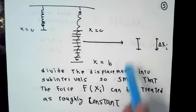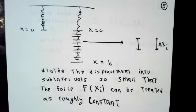Its vertical length is going to be called delta x number i. We're going to chop the thing up into such fine pieces that the force on that one little sub-interval can more or less be treated as though it were a constant.